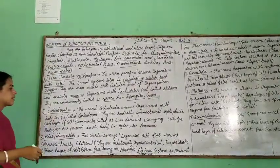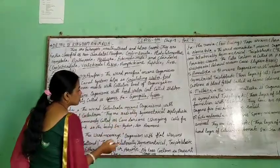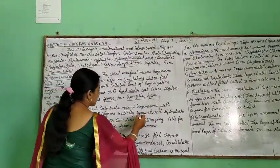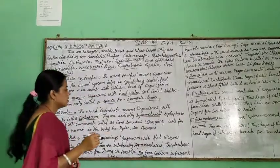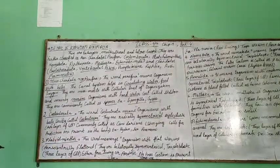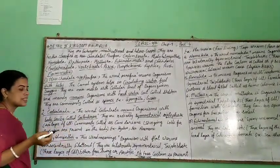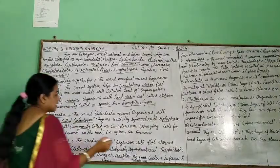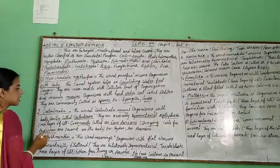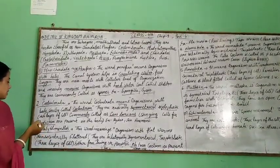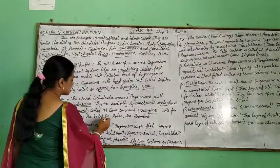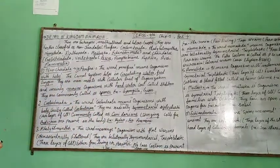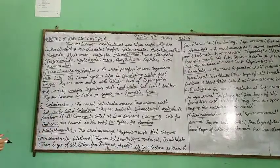The next phylum is Cnidaria. The word Cnidaria means organisms with a body cavity called coelenteron. They are radially symmetrical. They are diploblastic, meaning two layers of cells are present in their body. They are commonly called coelenterates. They have stinging cells for protection. Examples: Hydra and Sea Anemone.